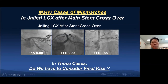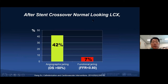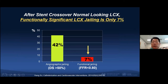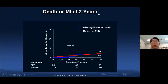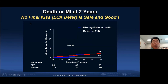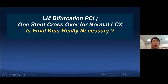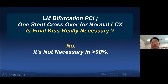So what do you think? In these cases, do we have to consider final kissing balloon inflation routinely? We have data showing that after stent crossover with a normal-looking circumflex, functionally significant compromise of the circumflex by FFR is only 7% — a very small percentage. Two-year follow-up for deaths and MI compared with routine kissing balloon inflation showed that no final kiss is safe and good — the circumflex outcome is good and safe. So for one-stent crossover with a normal circumflex, is final kiss really necessary? No — it's not necessary in more than 90% of cases.